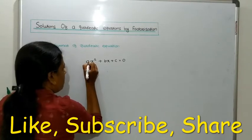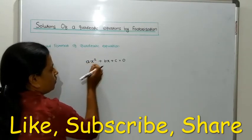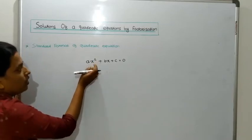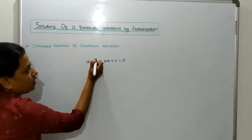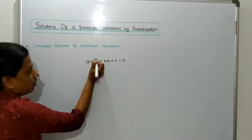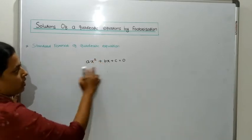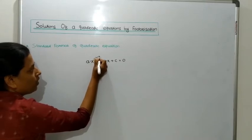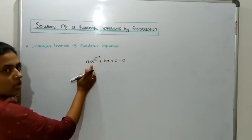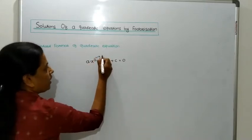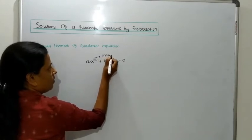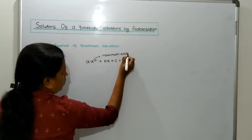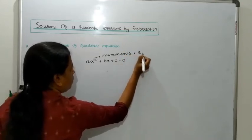What is the maximum degree of this equation? That is 2. The maximum index of the variable x is 2. That means there are only 2 roots of this equation — the maximum roots of this equation are 2, because the maximum index of x is 2. Therefore, maximum roots is equal to 2.